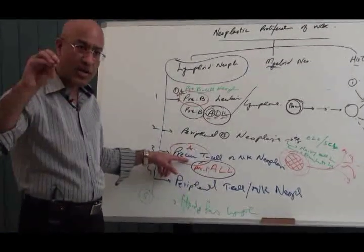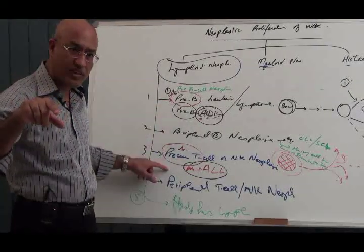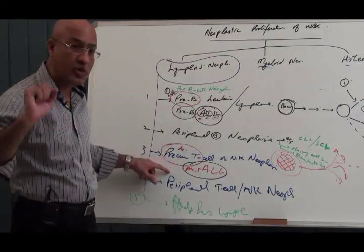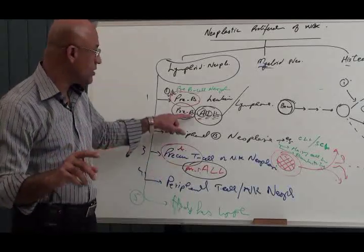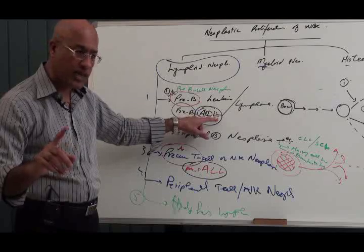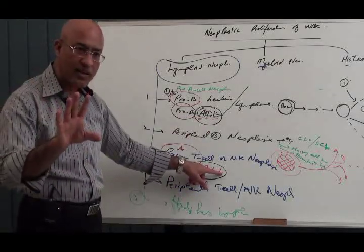So we can say lymphoid malignancies can be precursor B or precursor T. Always keep NK with T. So what happens - lymphoid tumors can be precursor B or precursor T because they produce acute highly aggressive lymphoblastic situation. So we call it B acute lymphoblastic leukemia or T or pre-T acute lymphoblastic leukemia. Clear?